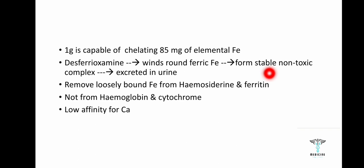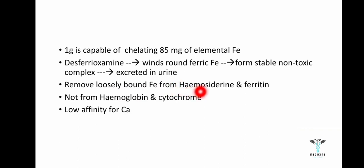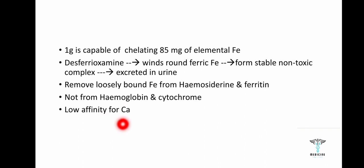The mechanism of action is that desferoxamine winds around the ferric iron and forms a stable, non-toxic complex, which is finally excreted in urine. It can only chelate loosely attached iron from hemosiderin and ferritin, not from hemoglobin and cytochrome, as iron is tightly bound there. It also has low affinity for calcium.